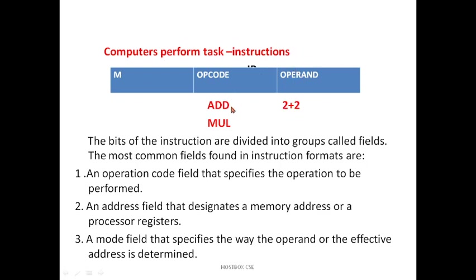The CPU has to understand and follow it. MUL means multiplication, meaning perform the multiplication operation. Here, operands like 2+2 specify what operation to perform. If I give ADD 2+2, it tries to print the answer 4 and store it somewhere.